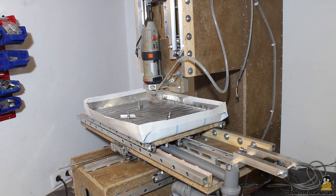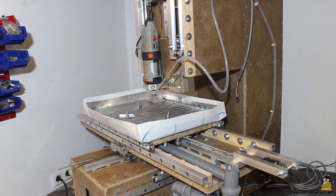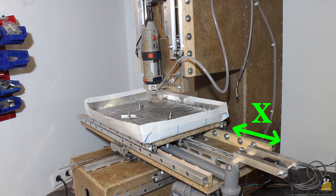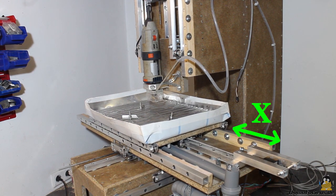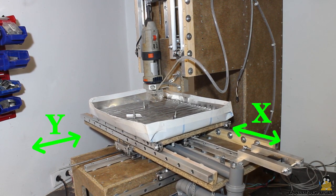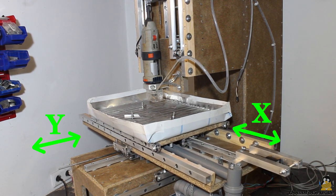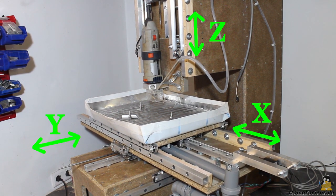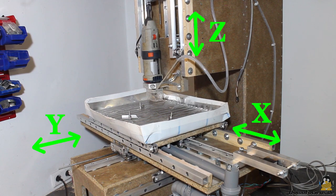My version of a computer numerical controlled router can move the mechanics along three axes. The X axis and the Y axis are for a horizontal movement, while the Z axis is for moving the cutting tool up and down.